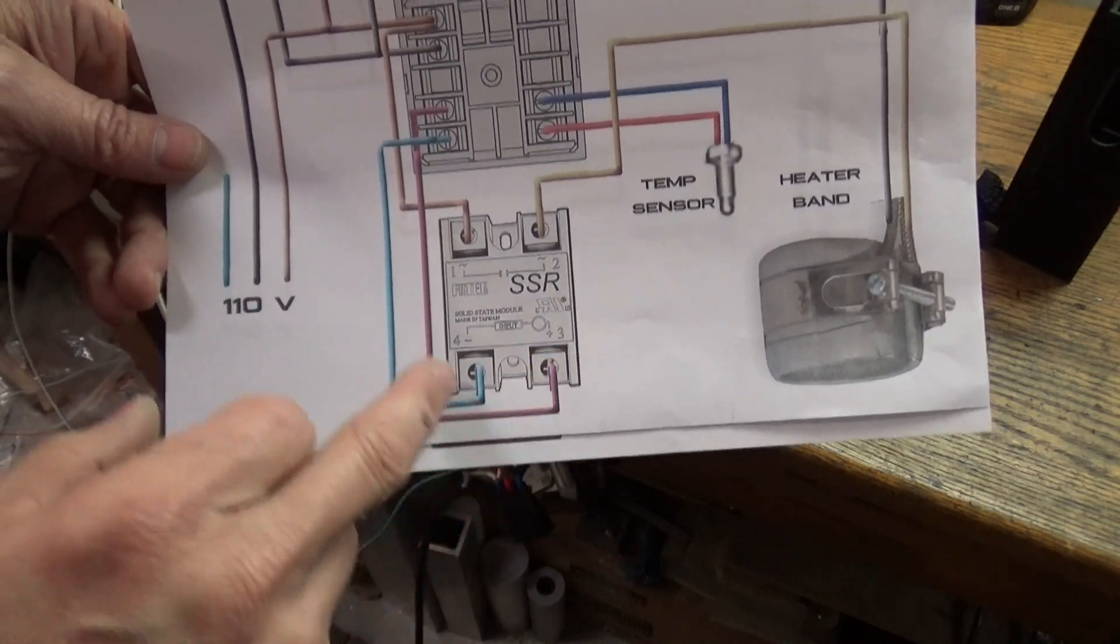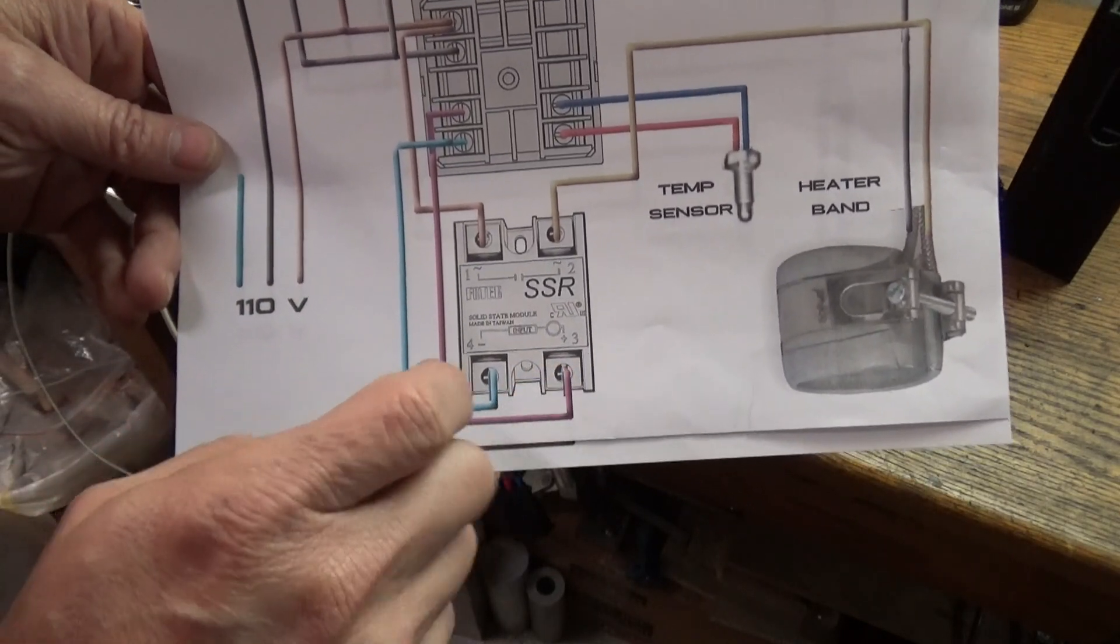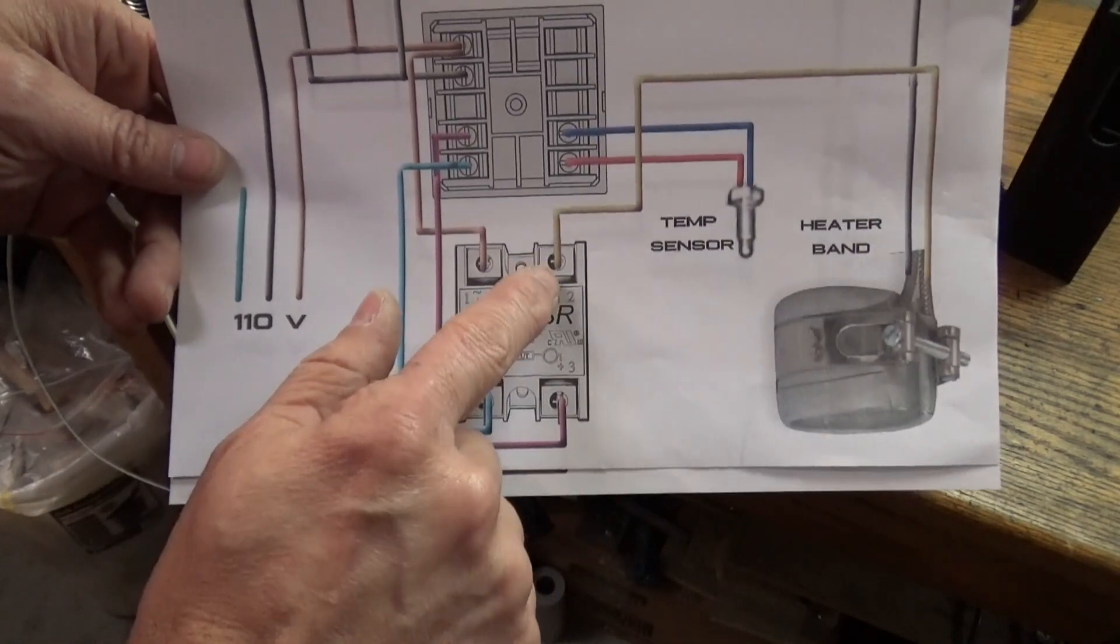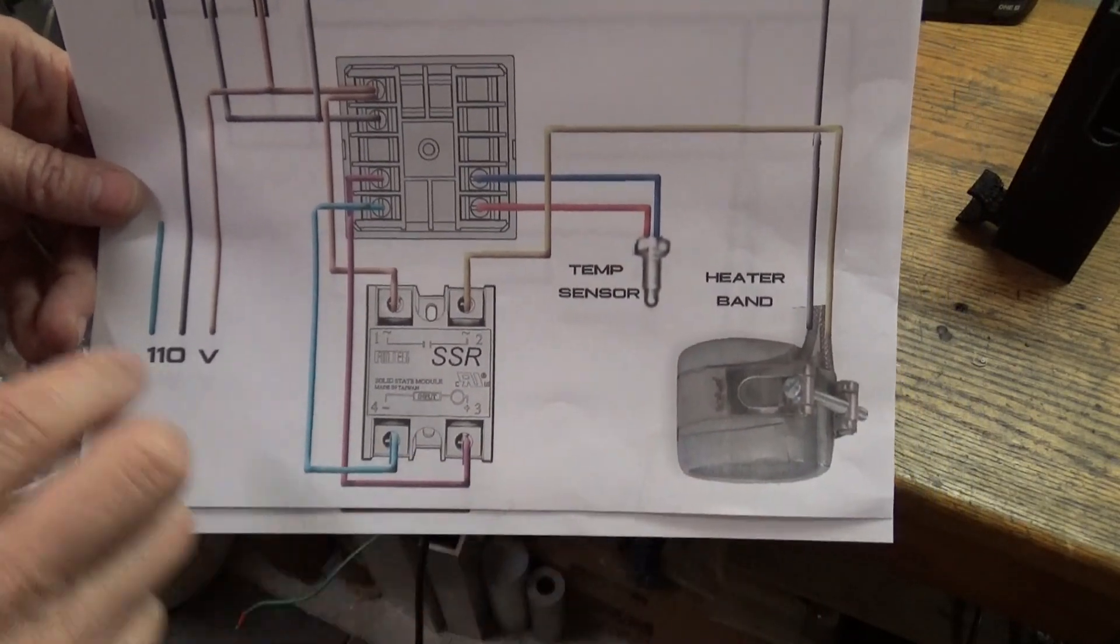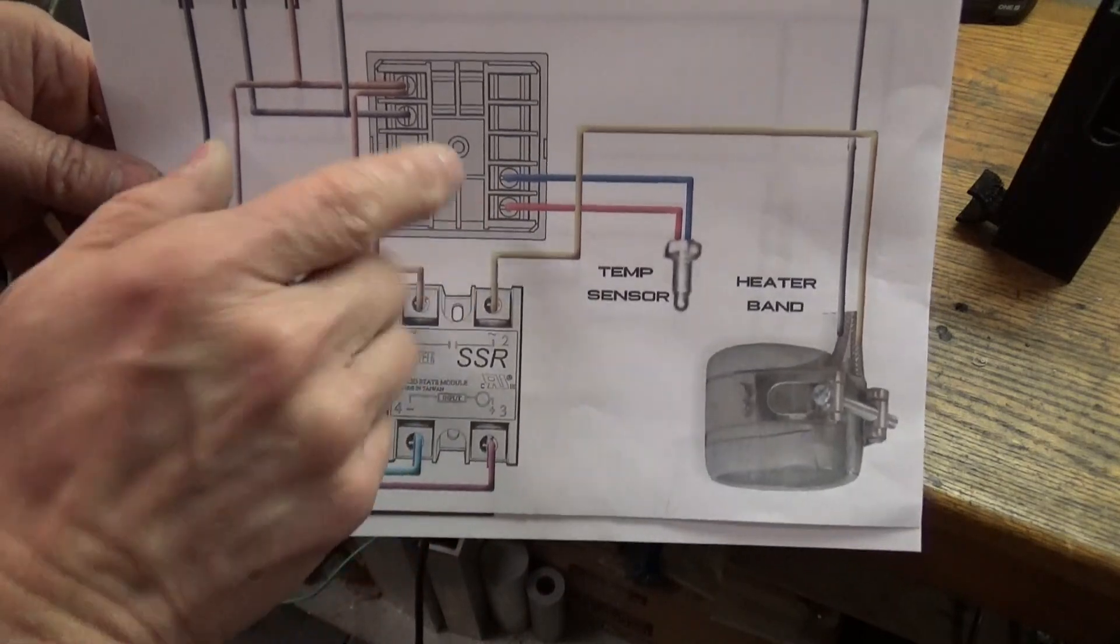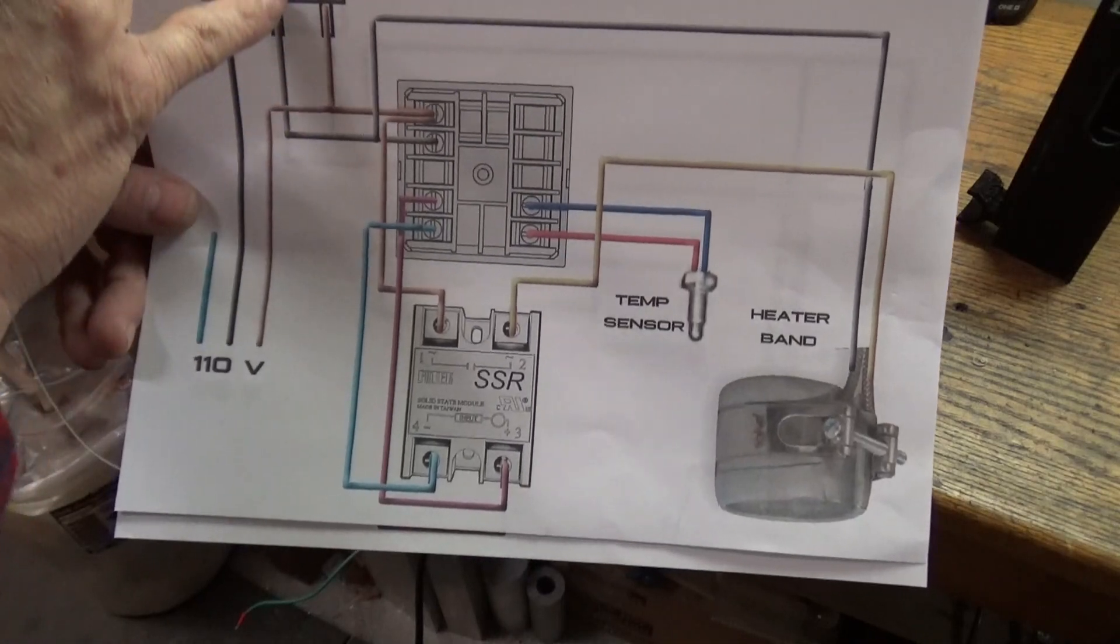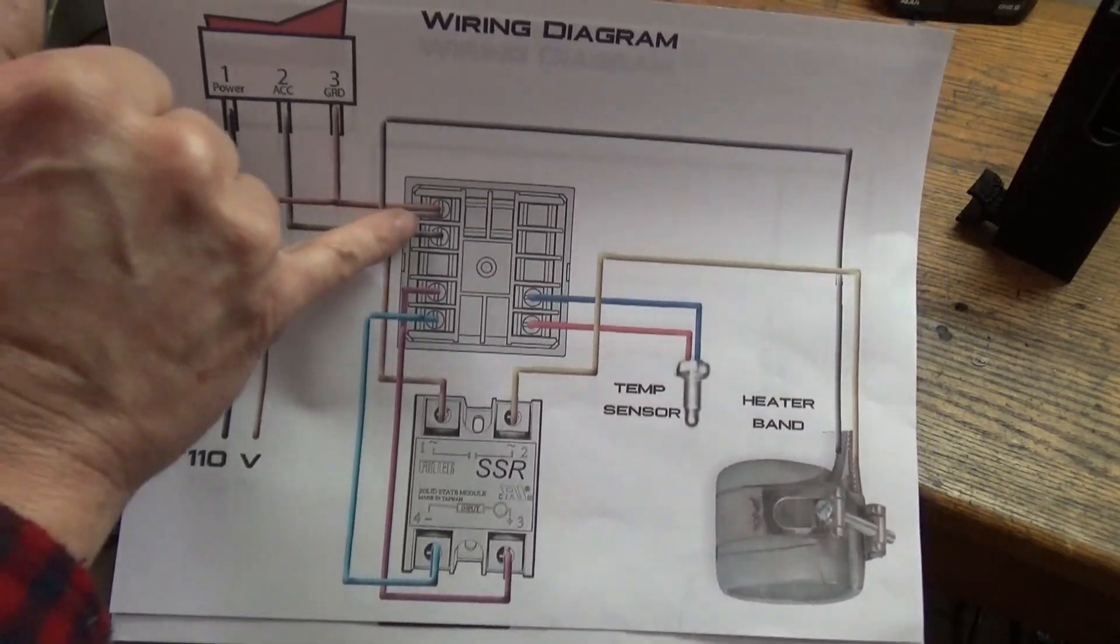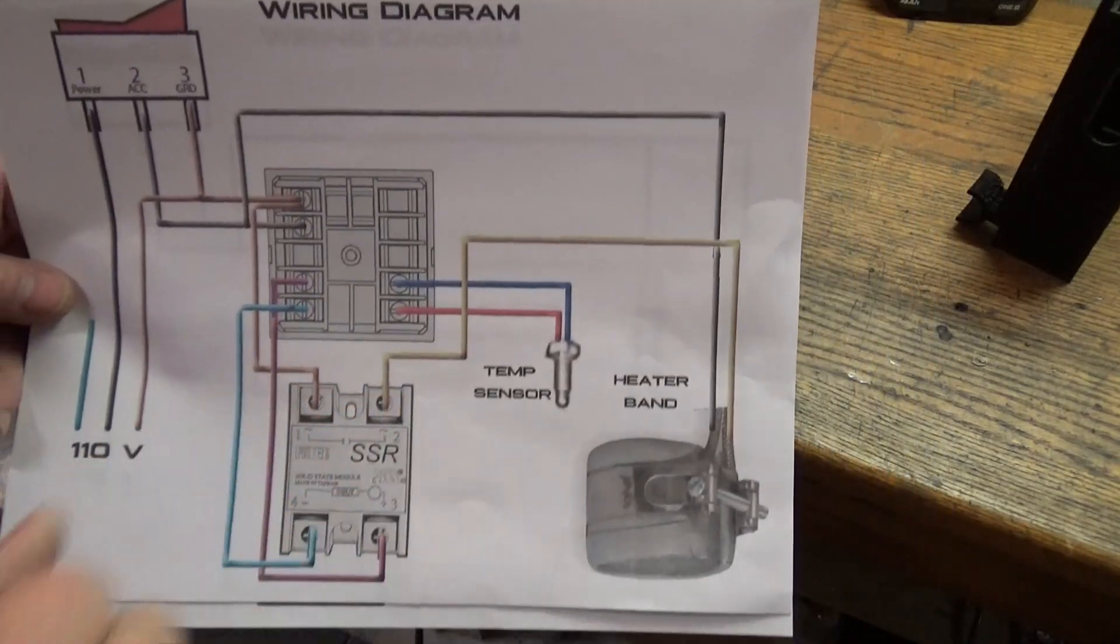To switch the relay here we have this purple and blue wire, and then coming out of the contacts of the relay we're going over to our band heater. Our temperature switch is just wired to these two connections here. On the switch side, our 110 volts goes to this terminal and then also goes over to the band heater.